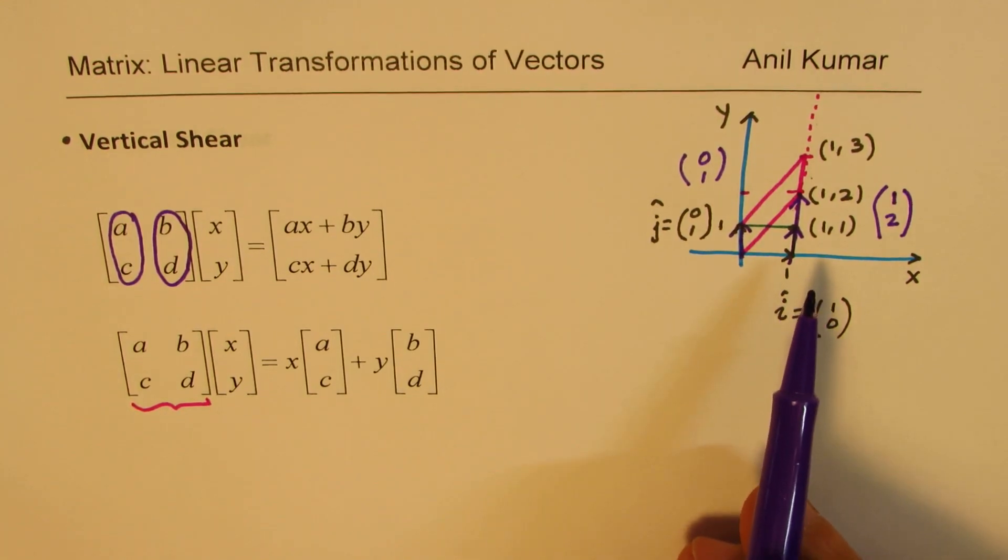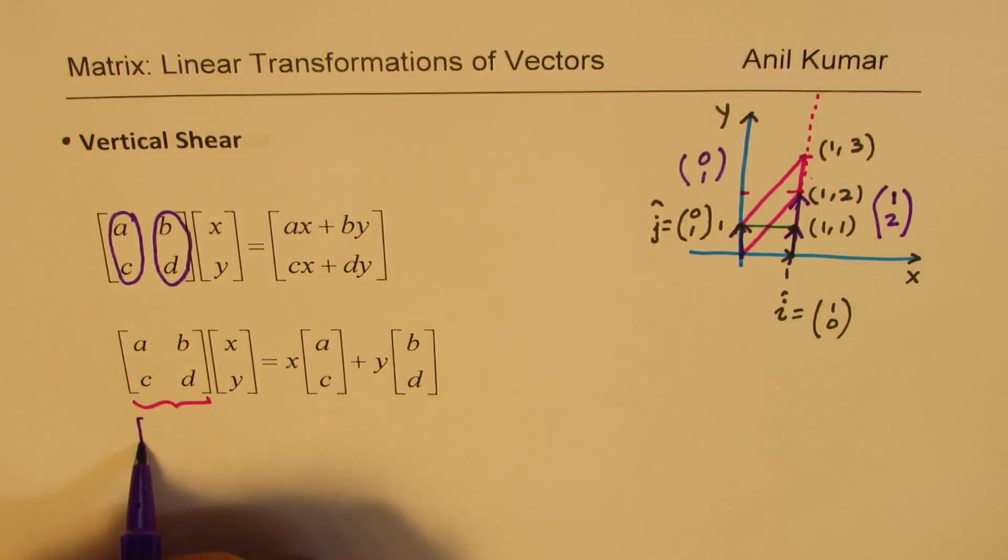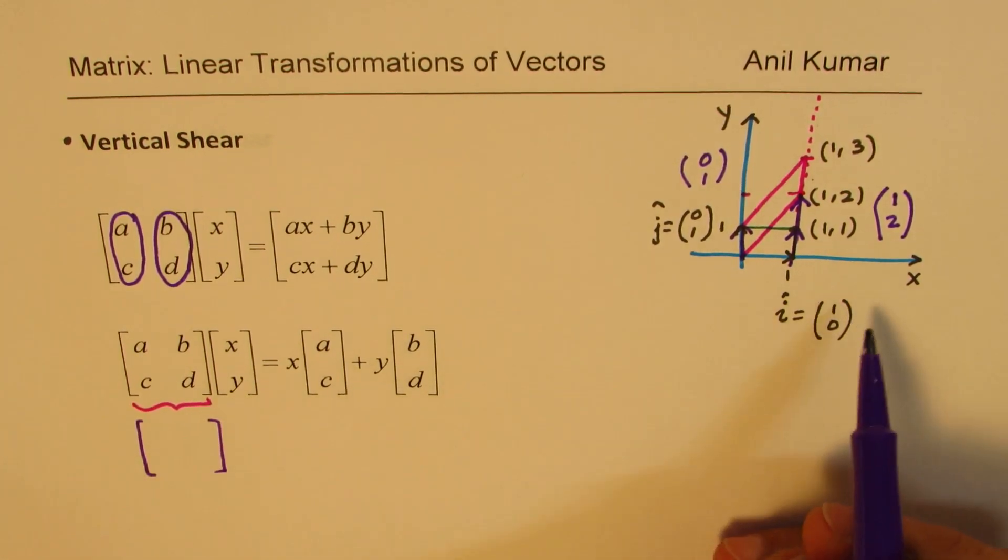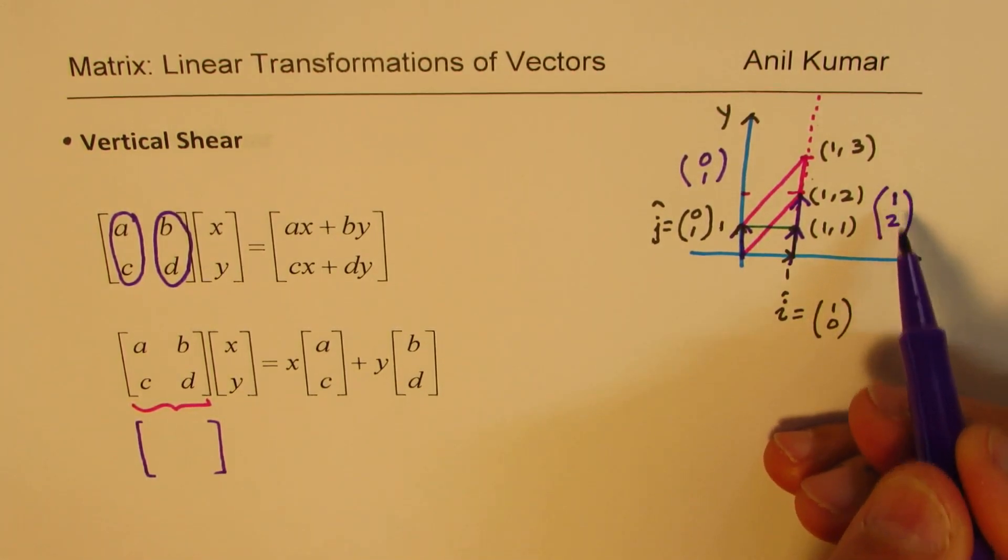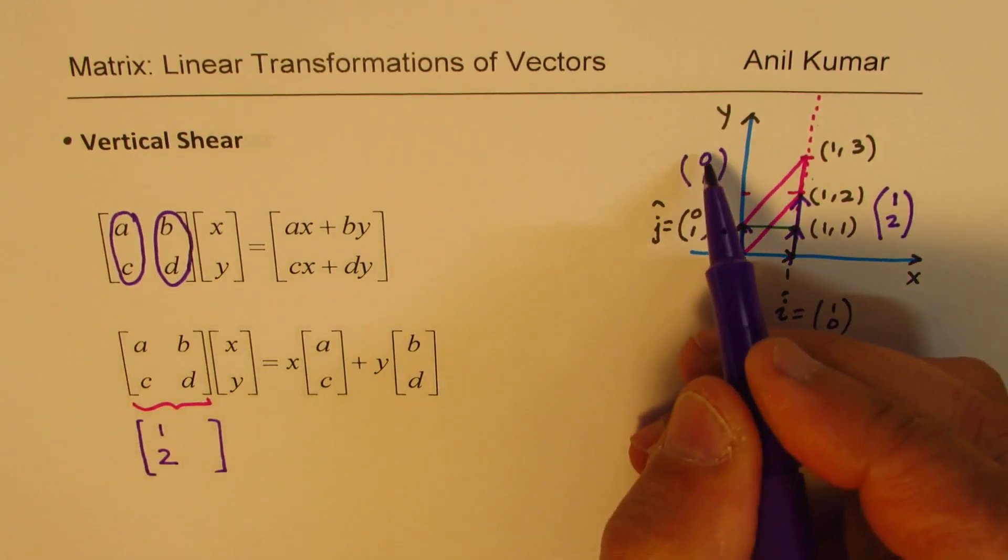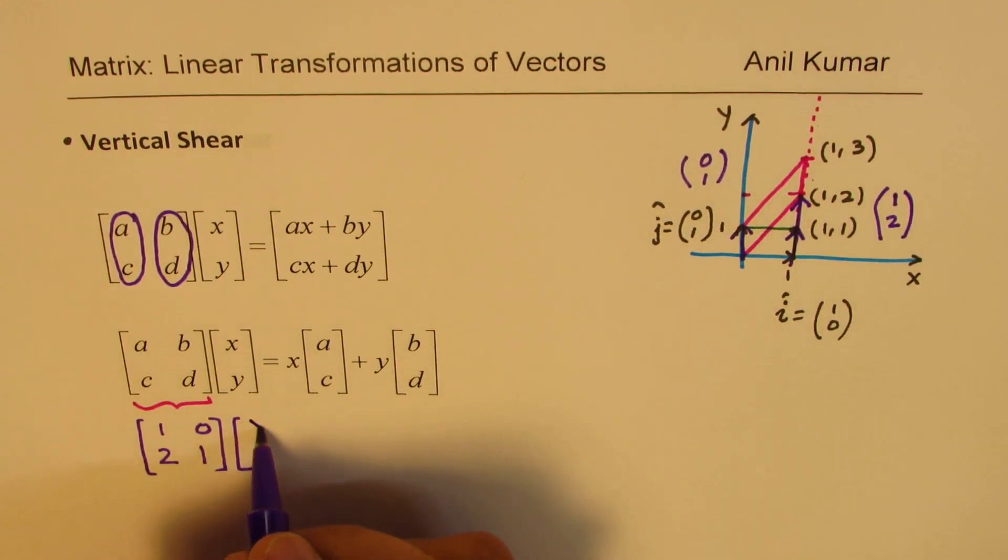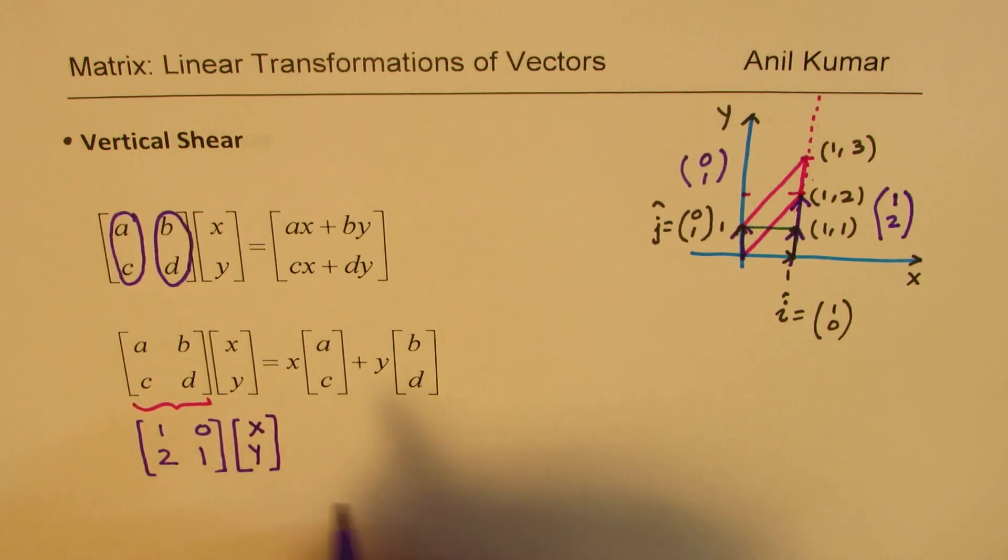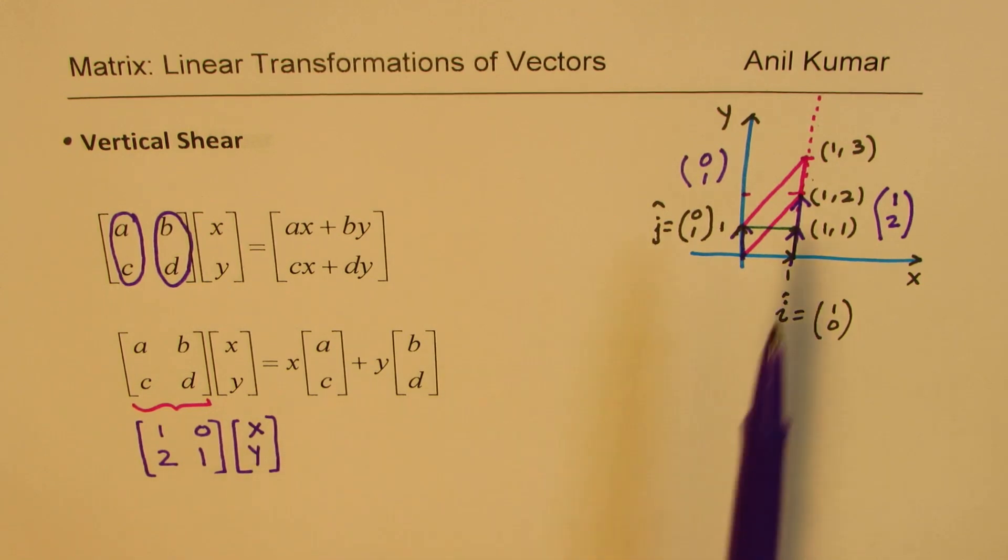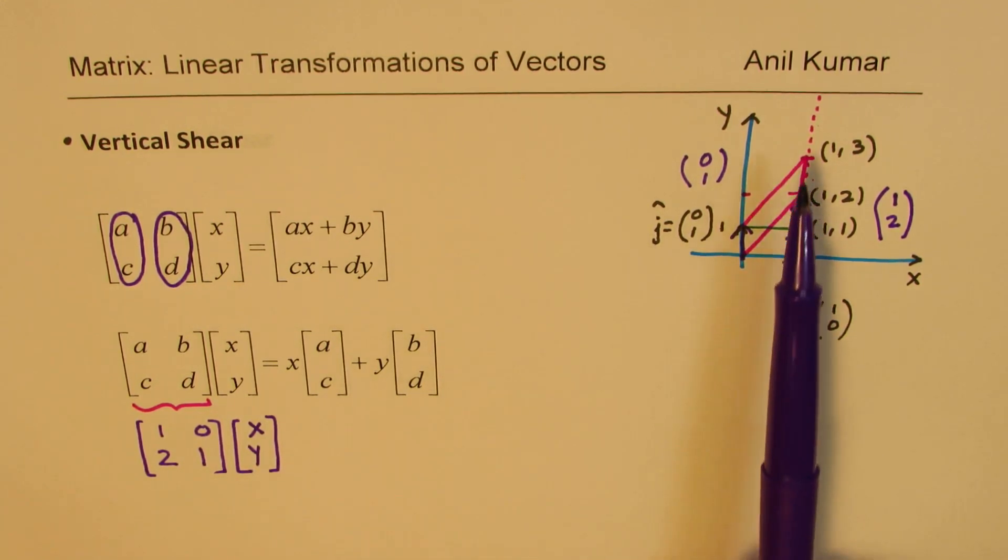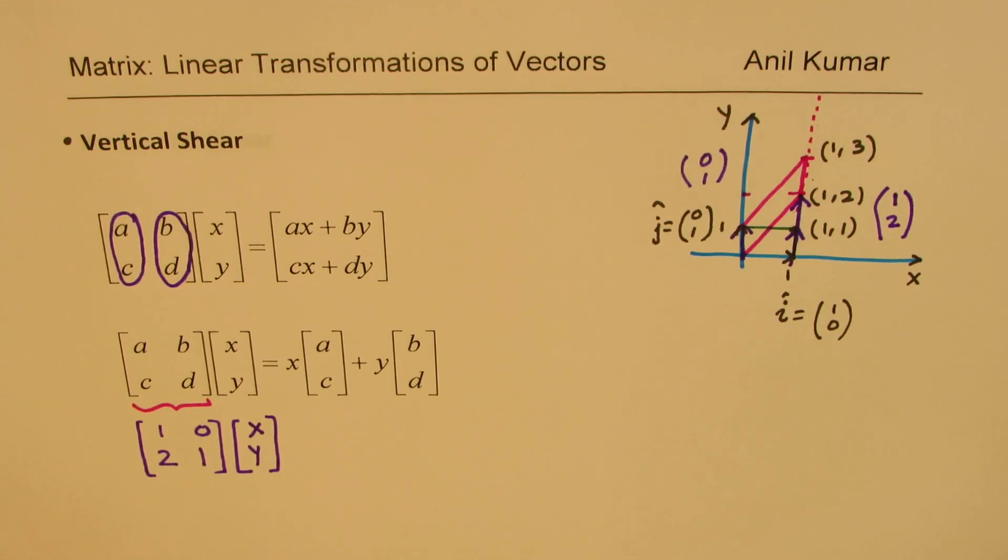So we can now write down our transformation matrix from here. So our transformation matrix is what? It is this change, which is 1,2, and that changed value, which is 0,1. And that could be actually applied to any value to show this kind of a vertical shear. So we get our matrix, which could perform this kind of a transformation. Now as an exercise, what you can do is, you can apply this to the set of points and see, do we really get the new set of coordinate points?